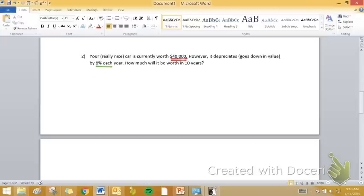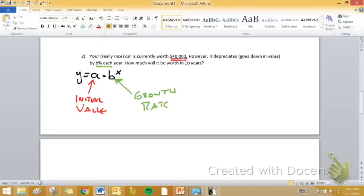Once again, we're going y equals a times b to the x. And I'm going to beat this dead horse by saying a is that initial value, and b is that growth rate.